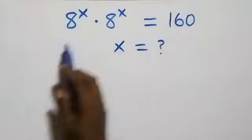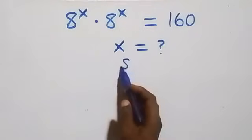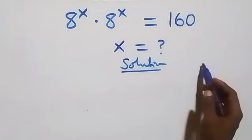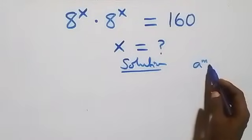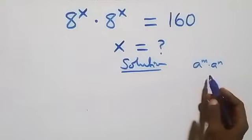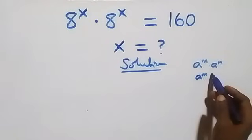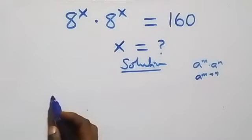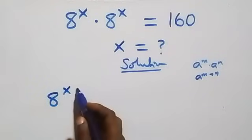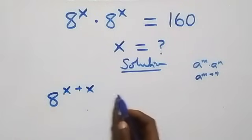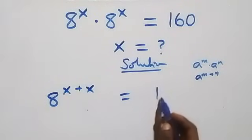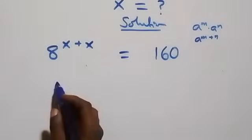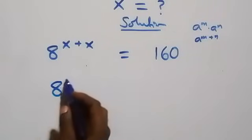Hello, you are welcome. How to solve this nice exponential equation. What is given here is: when we have a raised to power n, then a raised to power n, which we can write as a raised to power n plus n, and here all we have becomes a raised to power x plus x, then equals to 160. That is, this becomes a raised to power 2x equals to 160.